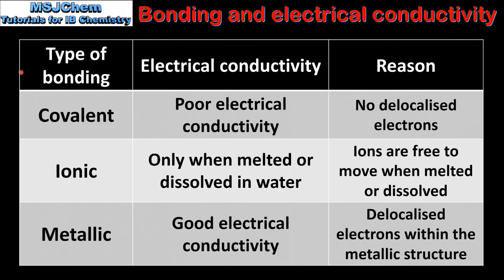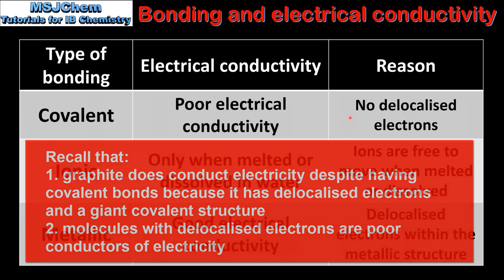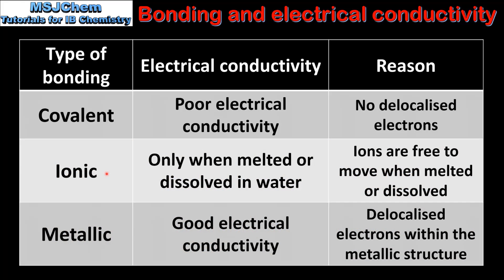To end with a summary: compounds with covalent bonds are mostly poor electrical conductors because they don't have delocalized electrons. Compounds with ionic bonding conduct electricity only when melted or dissolved in water, because the ions are free to move when melted or dissolved, but cannot move when solid. Substances with metallic bonding have good electrical conductivity due to the presence of delocalized electrons within the metallic structure.